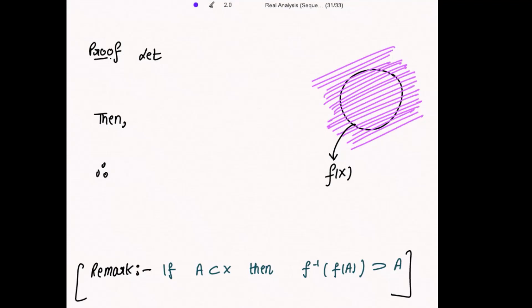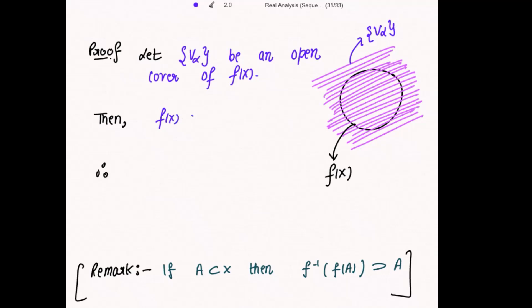Now starting the proof. We need to show that f(X) is compact. For that we need an open cover of f(X), so let V_α be an open cover of f(X). Then by the definition of open cover, f(X) is a subset of the union of V_α. Revisiting the remark: if A is a subset of X, then f inverse of f(A) contains A.